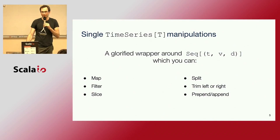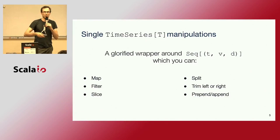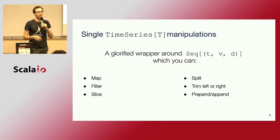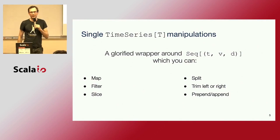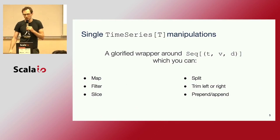Obviously you can map the value, you can filter them, but you can also do operations in the time domain. Like you could slice — if I have one year of data, I could slice the data for January, then maybe append it to some other sensor, or prepend it for another sensor for February. You can split the series, you can trim it left or right, prepend, append. Very simple stuff, but we found that it's stuff you do over and over again when you're dealing with time series data, so it really helps.